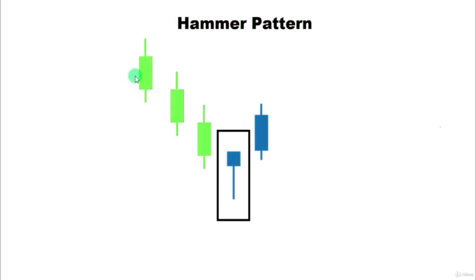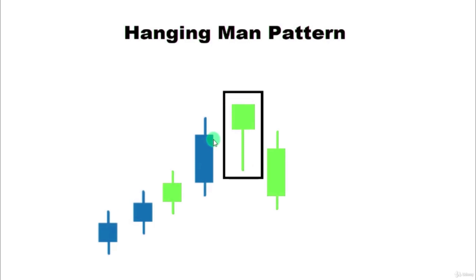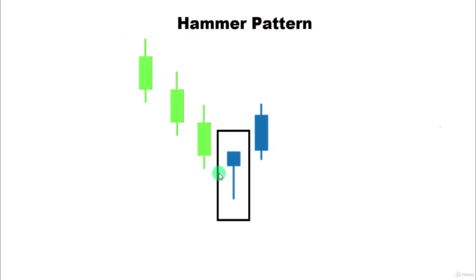In a downtrend, if we get this candle it is called a hammer pattern, because it hammers out the bottom. The candle structure is the same — a real body at the top with a shadow at least twice the real body. The color of the body is not very important, but a green colored candle in a downtrend is more significant, and a red colored candle in an uptrend has a lot of importance. Both these candles are reversal candles. A hanging man in an uptrend signals a reversal or correction, so prices may go downward. A hammer in a downtrend suggests prices will bounce back with an up move.